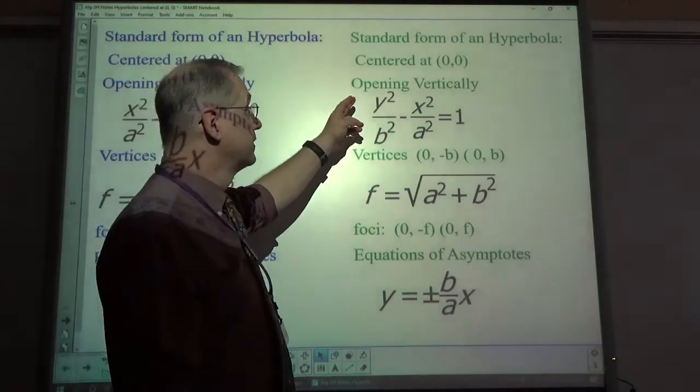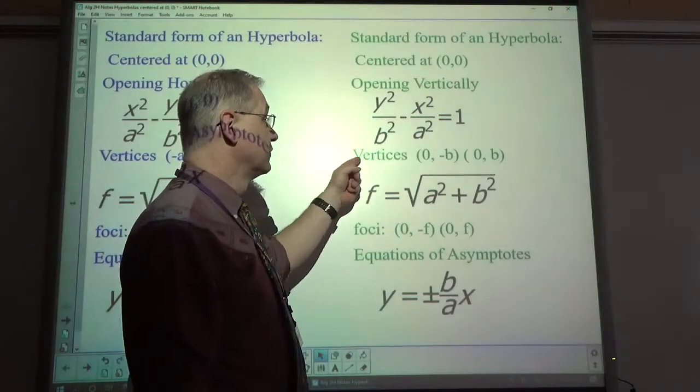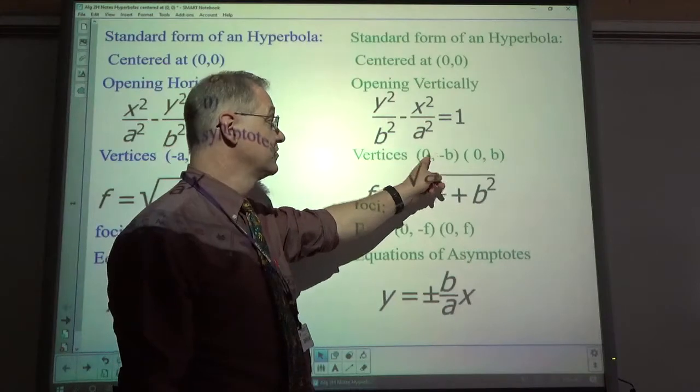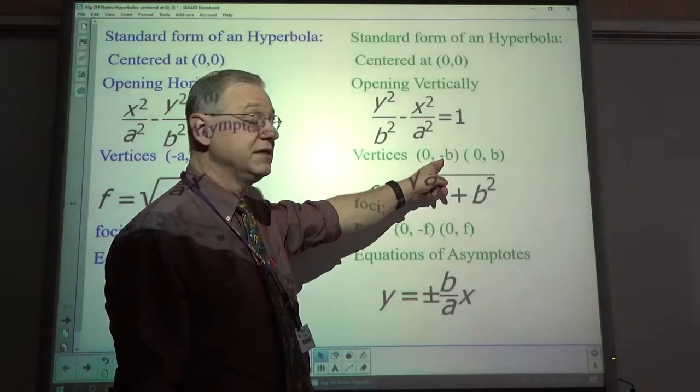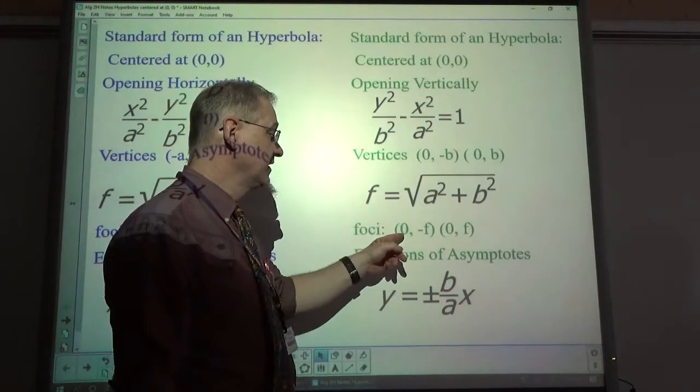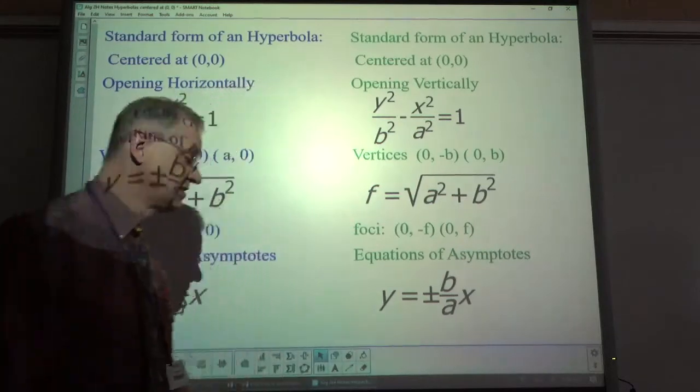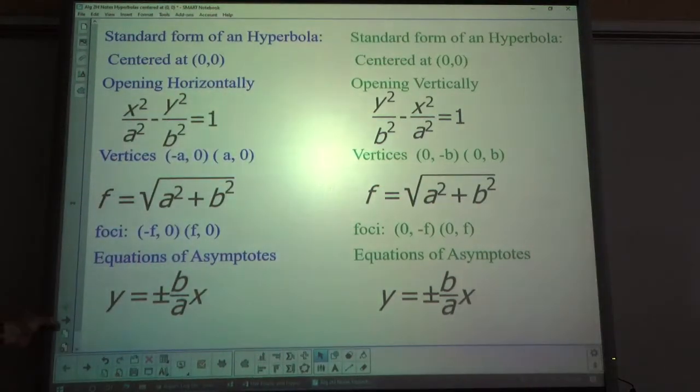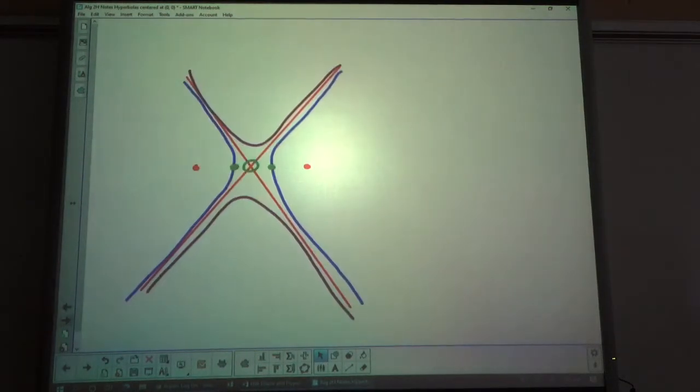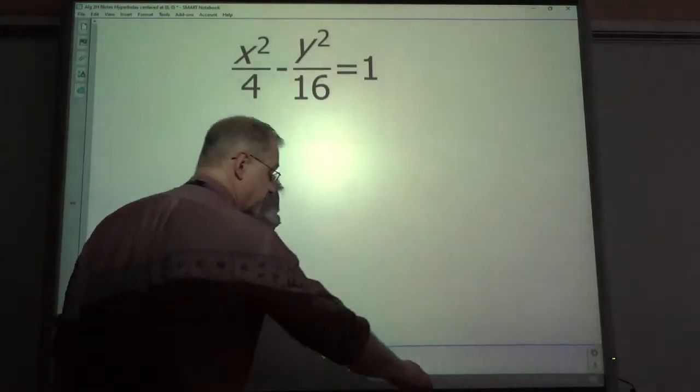Over here, the big difference is the y is listed first, not the x. The vertices are in the y-coordinate spot, so 0, plus or minus b. Same way to find f, foci is 0, comma, plus or minus f. And the equation of asymptotes is the same as over here. So, that's the equation.